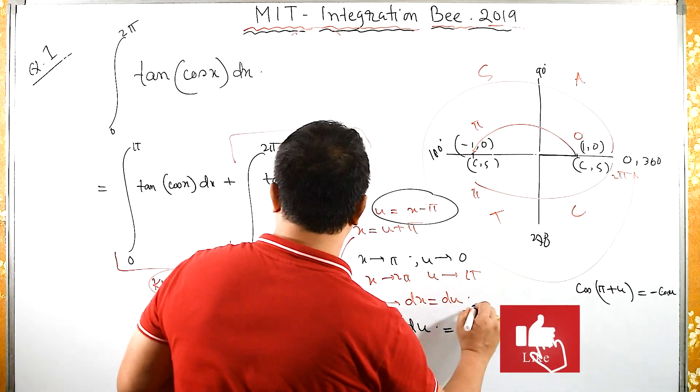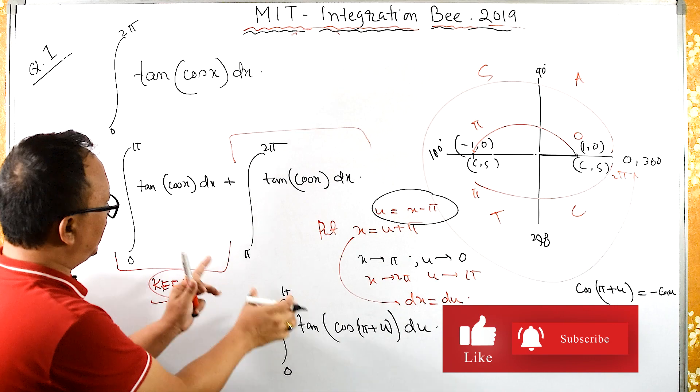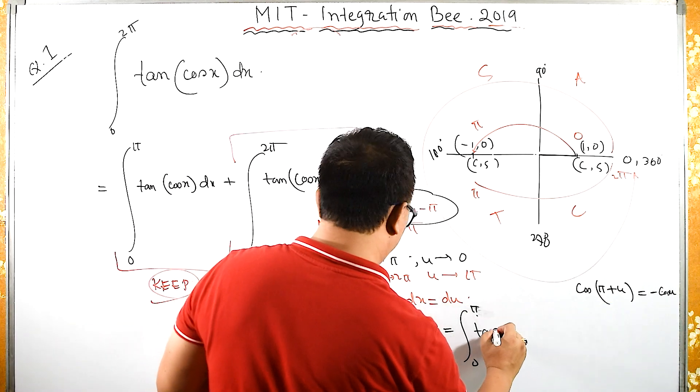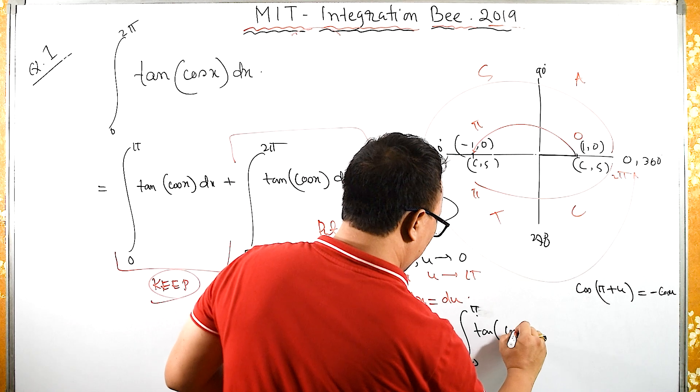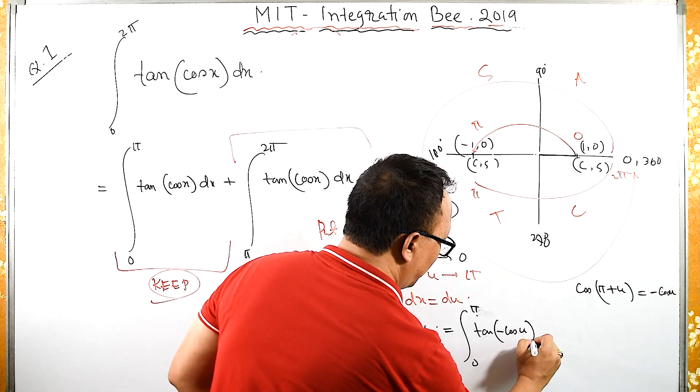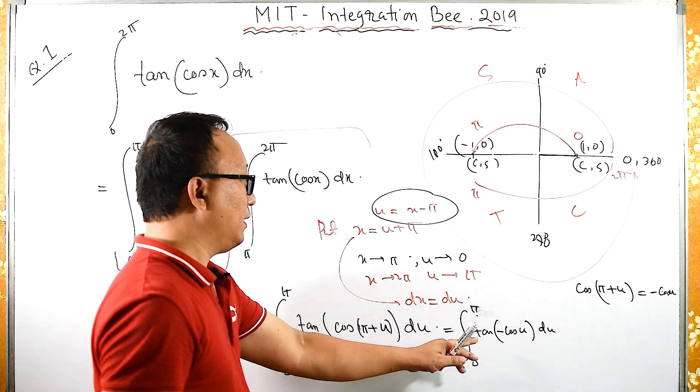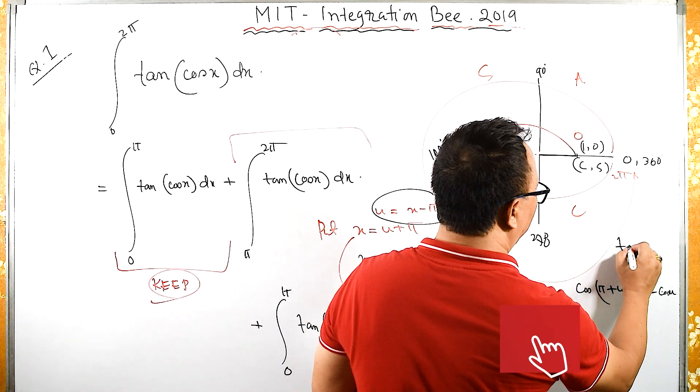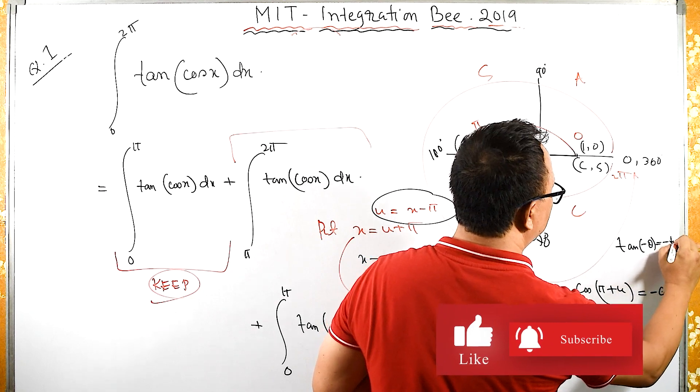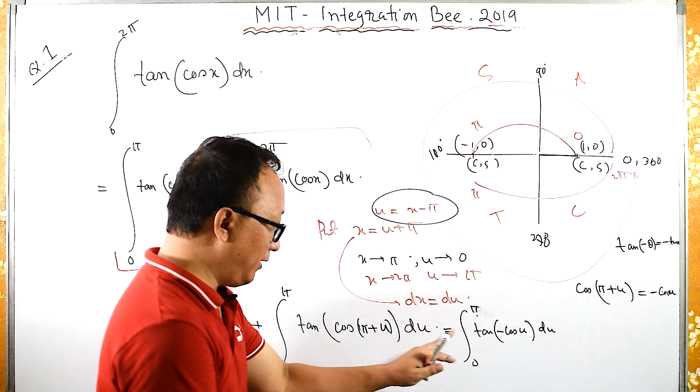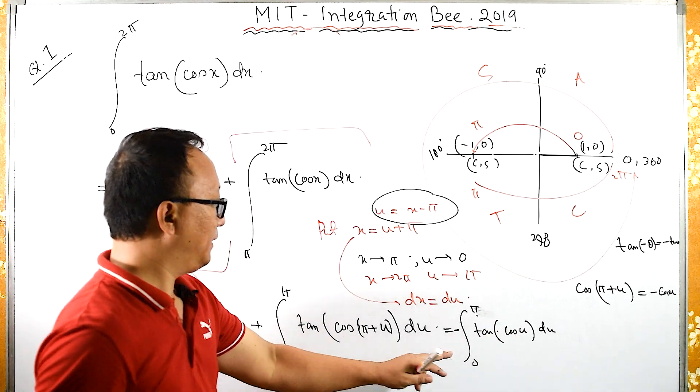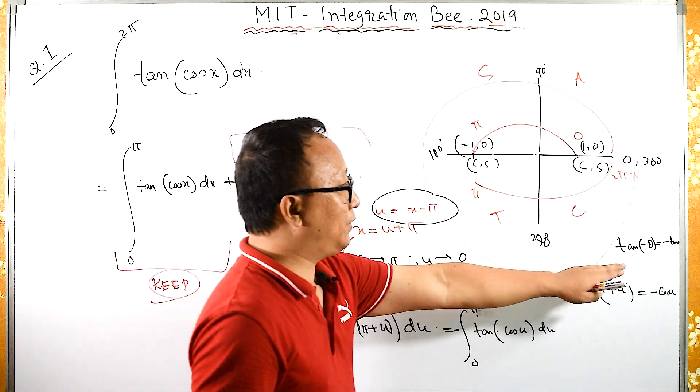Instead of cos(π + u), I can write: integral from 0 to π of tan(-cos u) du. But remember, tan is an odd function: tan(-θ) = -tan(θ). So this minus I am bringing out.